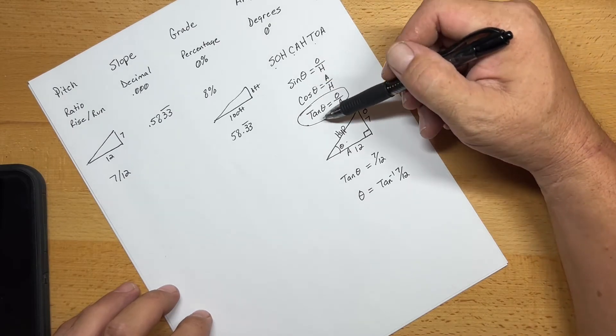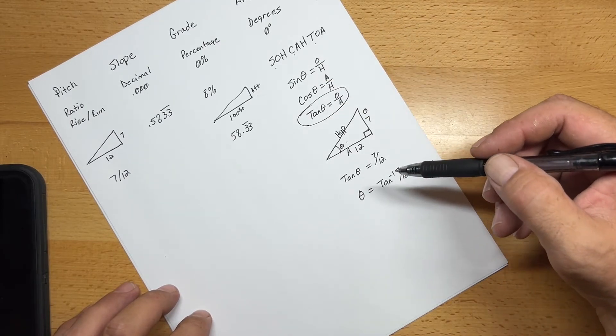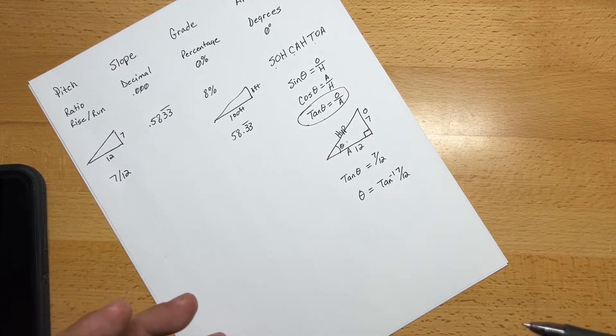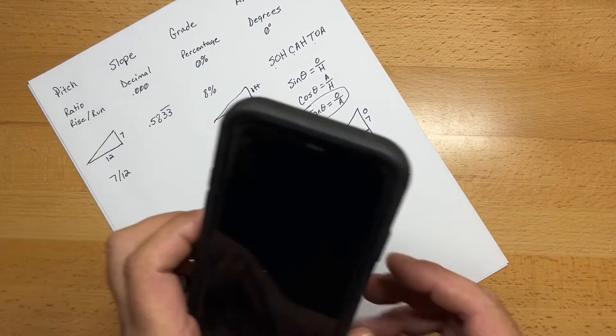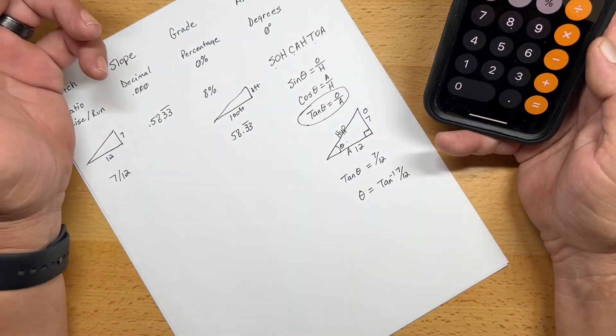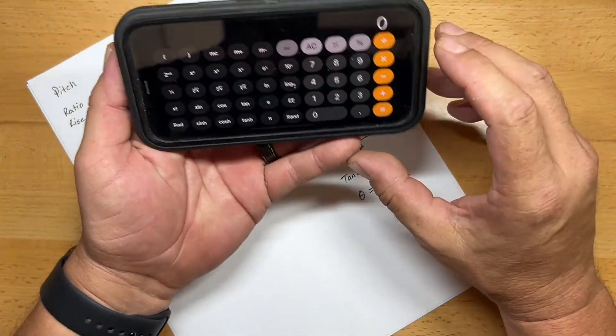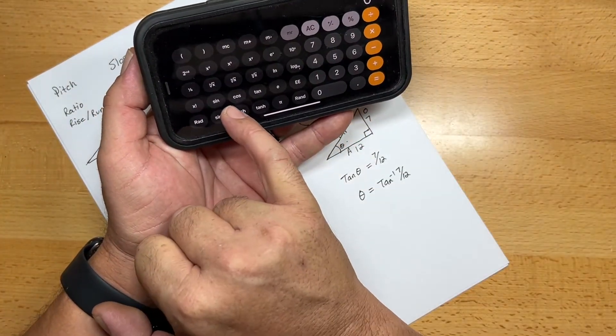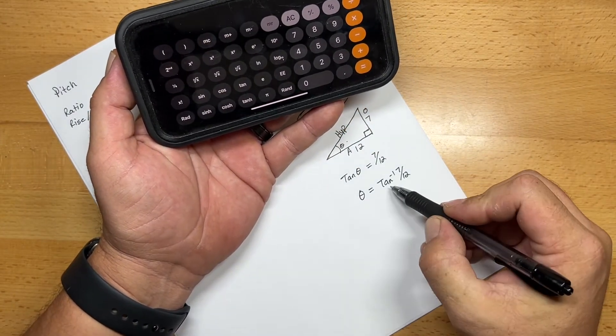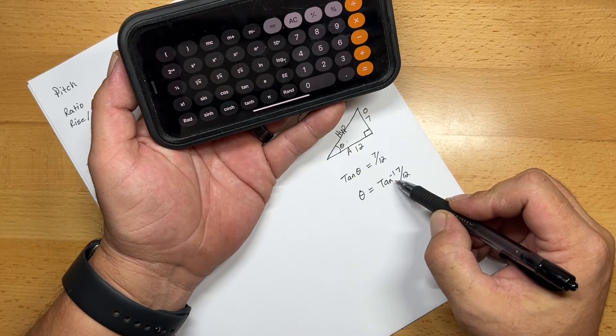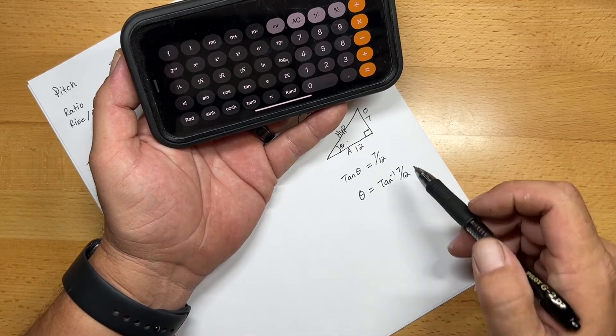Now, sine, cosine, and tangent, and then arc sine, arc cosine, and arc tangent are numbers that are stored in your calculator. So if we open up the calculator and we turn this, down here we'll see sine, cosine, and tangent. But because we move this across, now we need the arc tangent of this particular ratio.